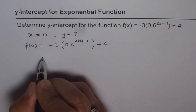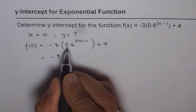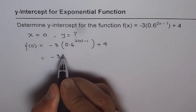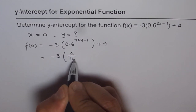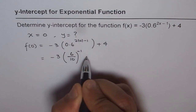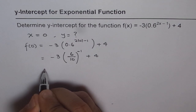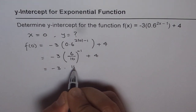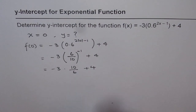Here we get minus 3, and 0.6 can be written as 6 over 10. So we can write this as 6 over 10 to the power of minus 1, plus 4. Or, we write this as minus 3 times 10 over 6, plus 4.